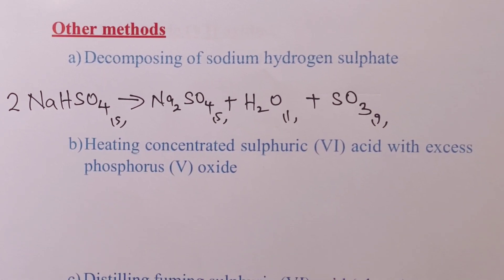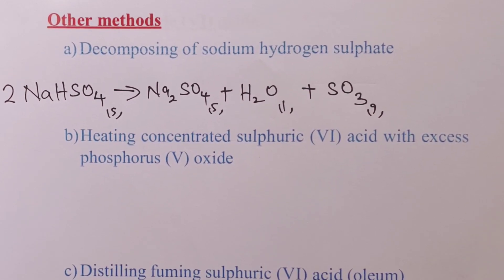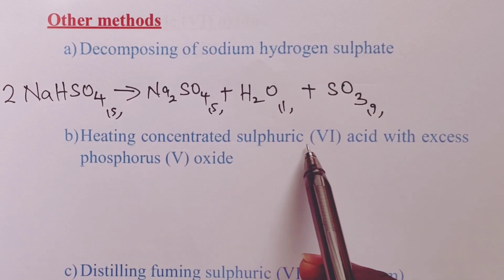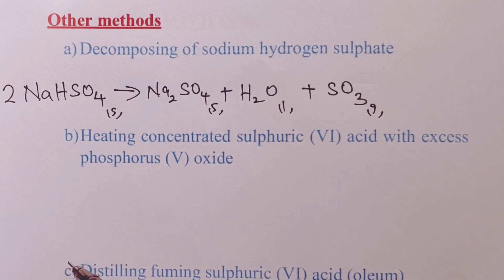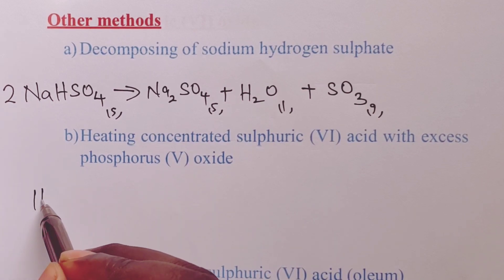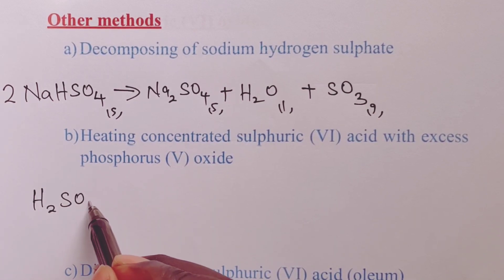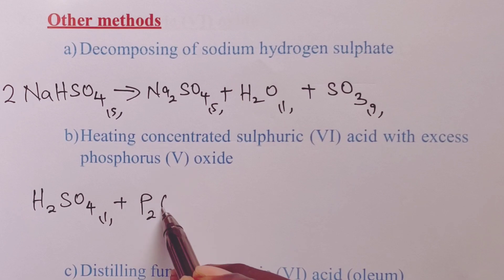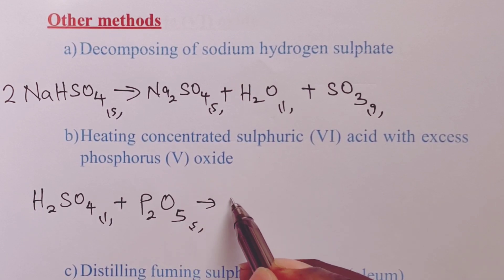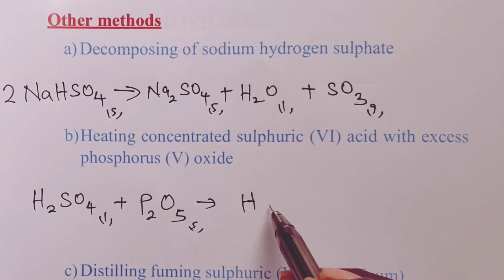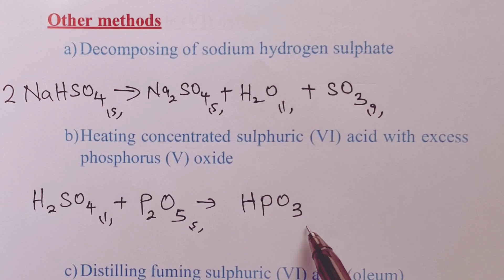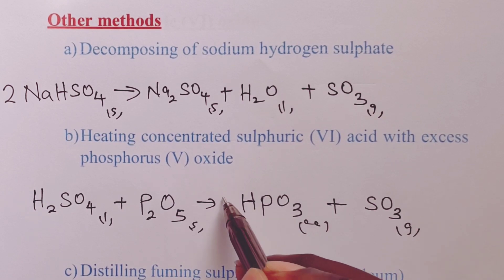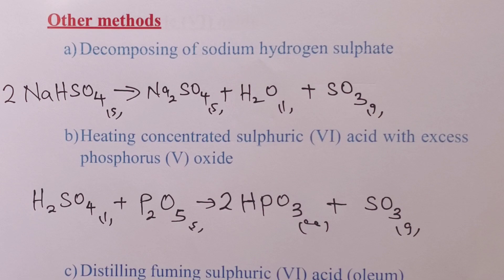Sulfur trioxide may also be obtained by heating concentrated sulfuric acid with a large excess of phosphorus(V) oxide. Concentrated sulfuric acid reacts with phosphorus(V) oxide to give a compound with the formula HPO3 (aqueous) together with sulfur trioxide gas, balanced with a 2 on HPO3.